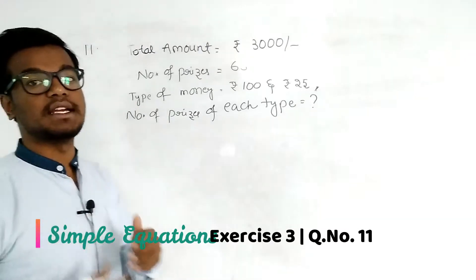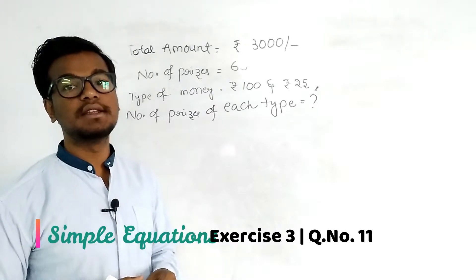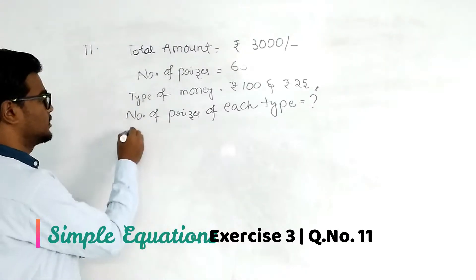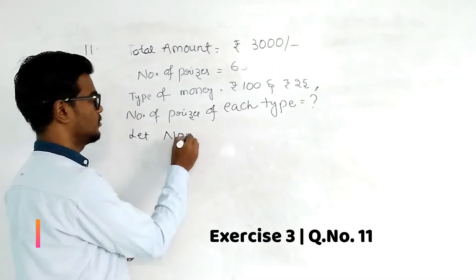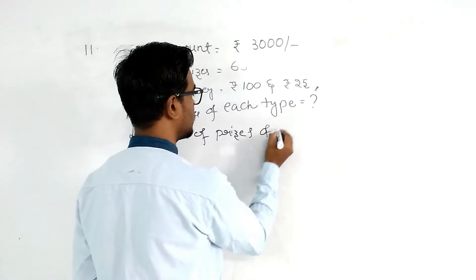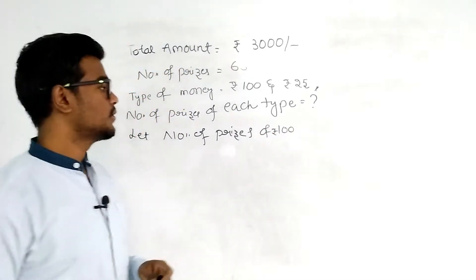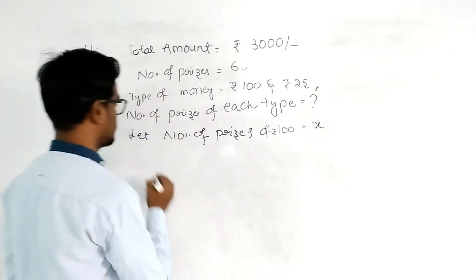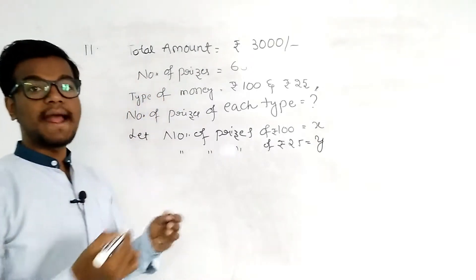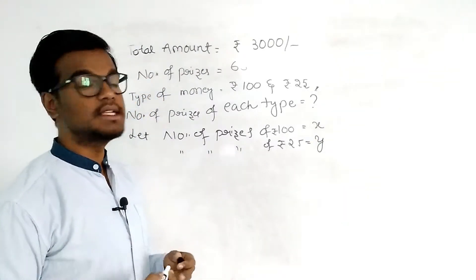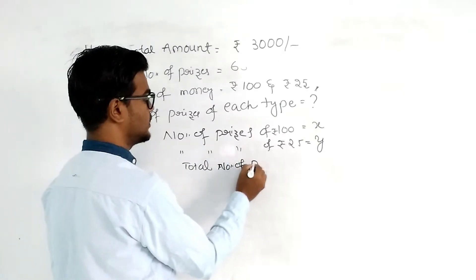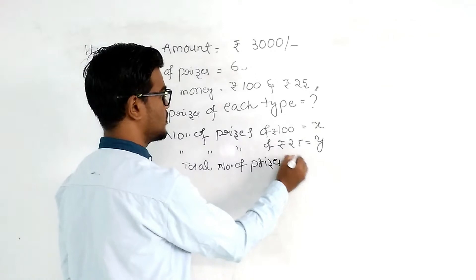We need to find the number of prizes worth 100 rupees and the number of prizes worth 25 rupees. Let the number of prizes with cost 100 rupees be X, and the number of prizes with cost 25 rupees be Y. Adding both types of prizes gives us 63, so X plus Y equals 63.